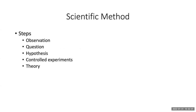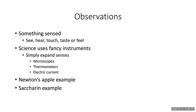These are the steps we typically talk about in the scientific method, and the slides are available. The steps are: observation, question, hypothesis, controlled experiments, and then a theory. I'll run a couple of threads and examples through each one.